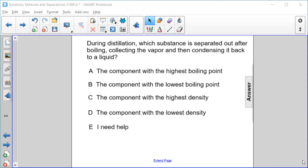During distillation, which substance is separated out after boiling, collecting the vapor and then condensing it back to a liquid? A: The component with the highest boiling point. B: The component with the lowest boiling point. C: The component with...